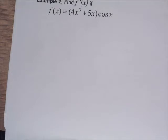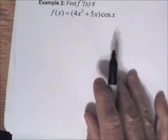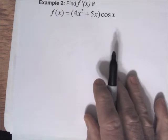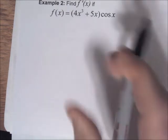Let's go over some more examples. Derivative of (4x³ + 5x) · cos x. Here we want to combine the product rule with the rule for cosine and the power rule.